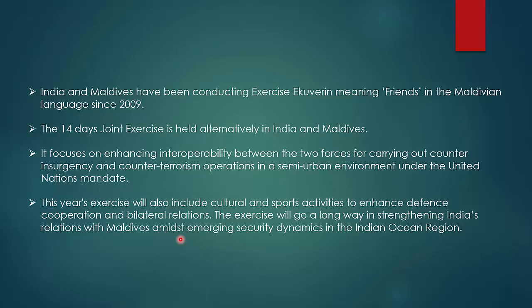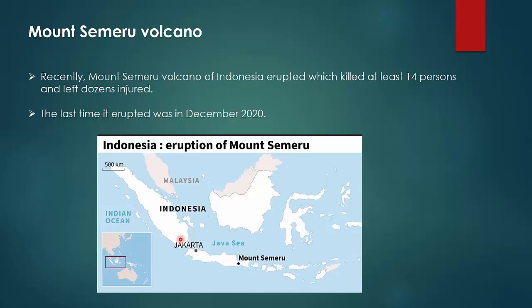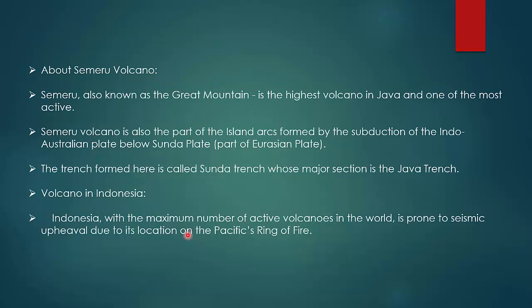Next, a small topic: Mount Semeru volcano. Recently, Mount Semeru volcano in Indonesia erupted, killing at least 14 persons and leaving dozens injured. The last time it erupted was in December 2020. Mount Semeru, also known as the Great Mountain, is the highest volcano in Java and one of the most active volcanoes. Meru means 'mountain' in Sanskrit, reflecting India's deep-rooted cultural ties with Indonesia from the Ramayana era.